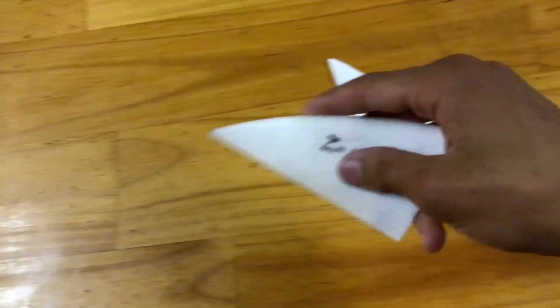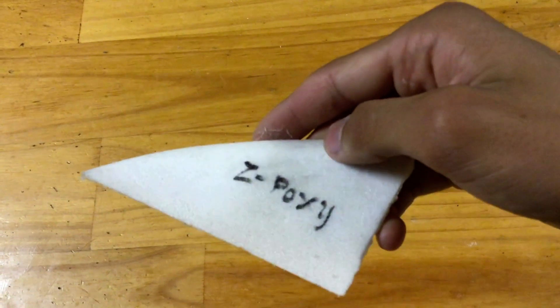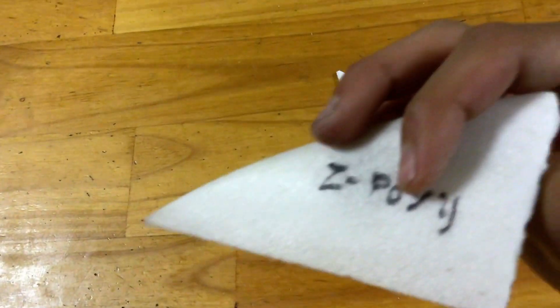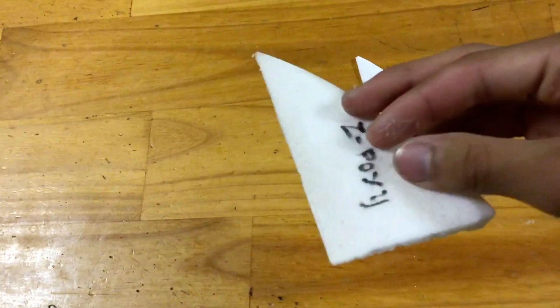This second test wing is covered with a coat of Z-Poxy fiberglass finishing resin that weighs 1.41 grams. As well as being a little heavier, the surface finish on this one also came out a little more rough.